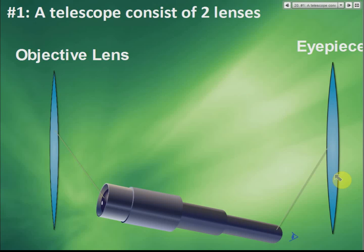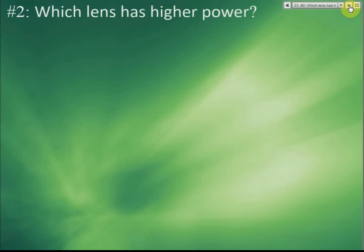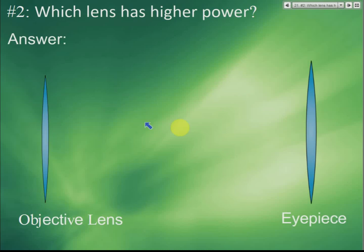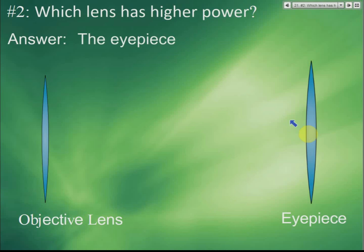Among these two lenses — the objective lens and the eyepiece — a favorite exam question is: which lens has higher power, or shorter focal length, or is thicker? The answer is the eyepiece. The eyepiece has higher power, while we try to make the objective lens power as low as possible.